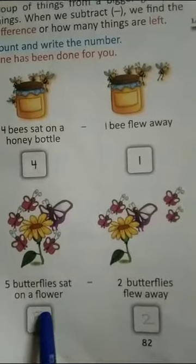5 butterflies sat on a flower. 2 butterflies flew away. 3 are left. Next.